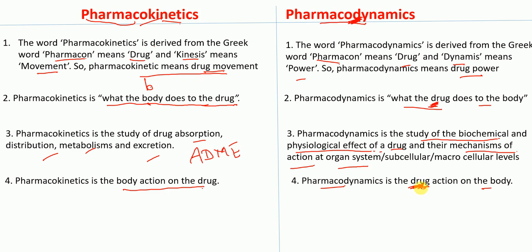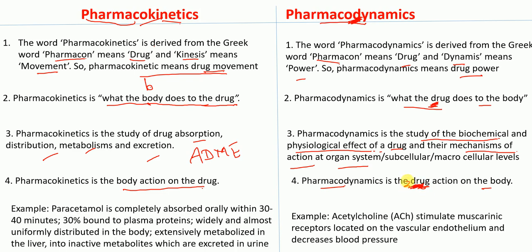For example, paracetamol is a drug that is completely absorbed orally within 30 to 40 minutes, 30% is bound to plasma proteins, it is widely and almost uniformly distributed in the body, and extensively metabolized in the liver into inactive metabolites which are excreted in the urine. This is an example of pharmacokinetics — absorption, distribution, metabolism, and excretion.